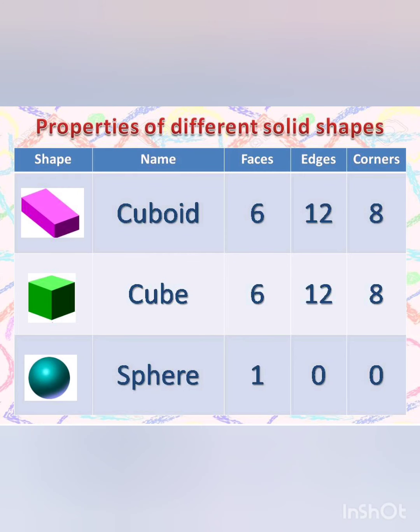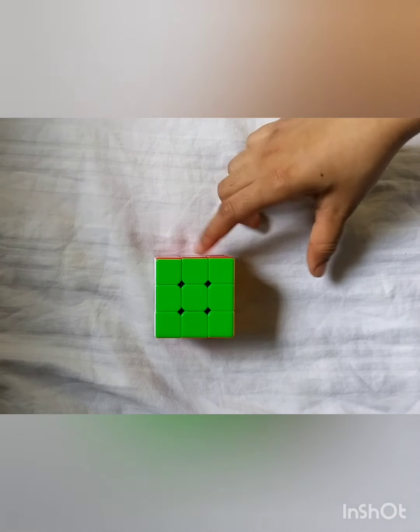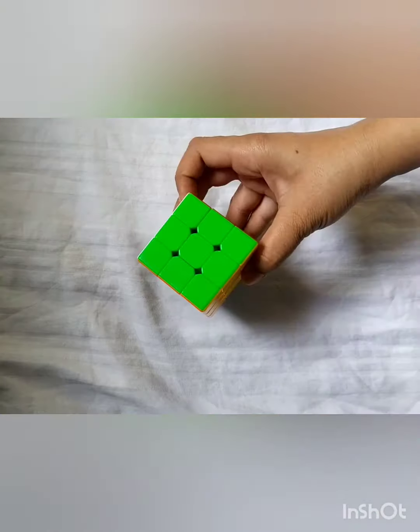Now let's talk about the second shape with square faces. It is called a cube. A cube has six faces, twelve edges, and eight corners. The only difference between a cube and a cuboid is that a cube has all square faces while a cuboid has rectangular faces. Here is an example of a cube, as it has square faces.